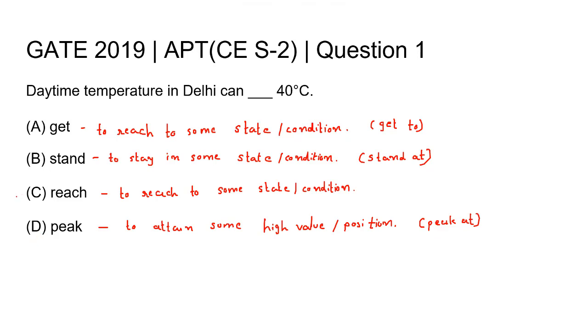So the right answer to this question is option C, 'reach', making the statement: 'Daytime temperature in Delhi can reach 40 degrees Celsius.'